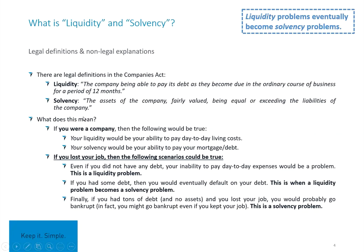Solvency is where the assets of a company, fairly valued, are equal to or exceed the liabilities of the company. Assets less liabilities is equity — the net asset value of a company. So solvency is telling us the company needs to have equity. This is a very important point: fairly valued. Balance sheets tend to be historical. A company that on paper appears solvent may have worthless assets and in fact its liabilities may exceed its assets.